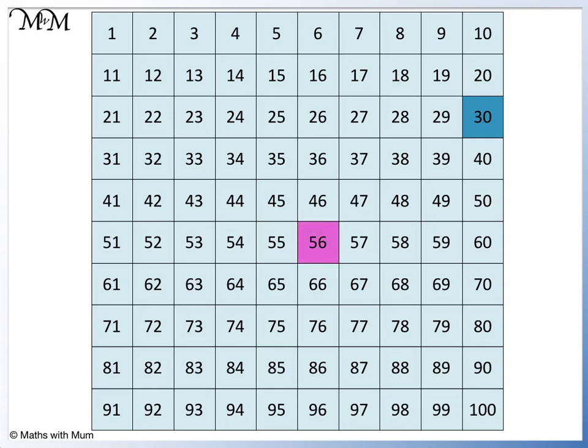Because 30 is both even and a multiple of 3, it is also a multiple of 6. Next, we'll look at 56. 56 is even. Now we'll check to see if it is a multiple of 3. 5 plus 6 equals 11. 11 is not in the 3 times table, so 56 is not a multiple of 6.